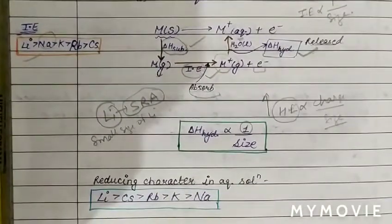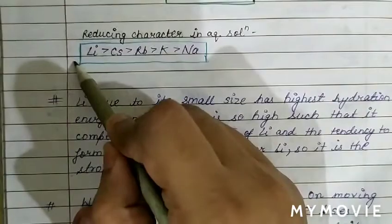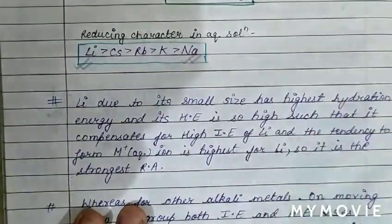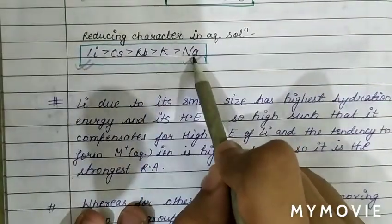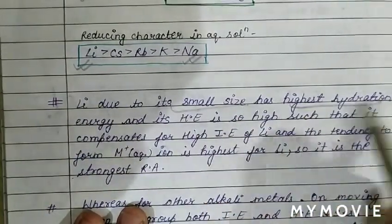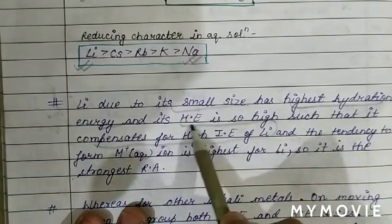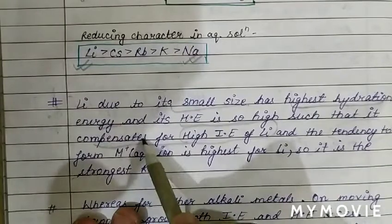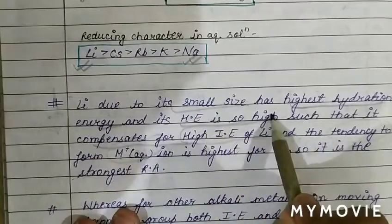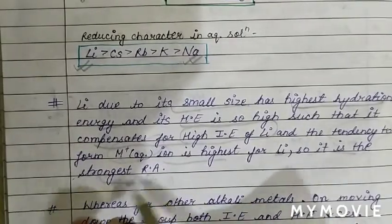Lithium has the strongest reducing power and sodium has the least reducing power among alkali metals. Always remember: lithium is the strongest and sodium is the weakest reducing agent. Lithium has the highest hydration energy due to its small size, which compensates for its high ionization energy. Therefore, the tendency to form M⁺ aqueous ion is highest for lithium, making it the strongest reducing agent.